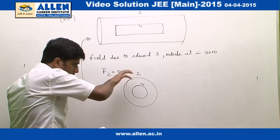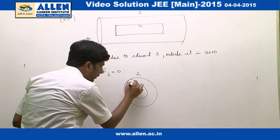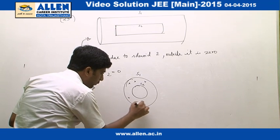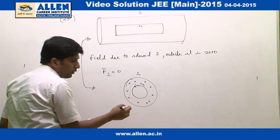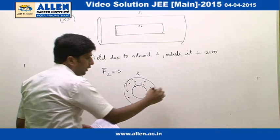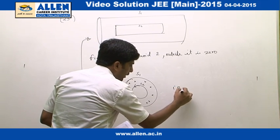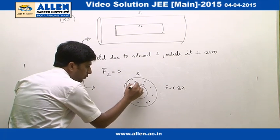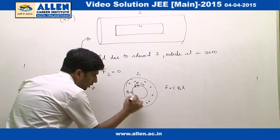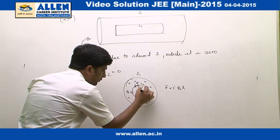If field due to S1 is into the plane of the board, then according to the formula F equals to I B L, we get the direction of the force at every point in the radial outward direction.